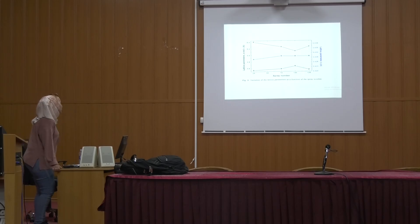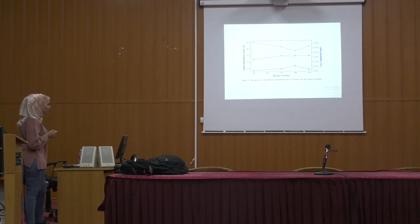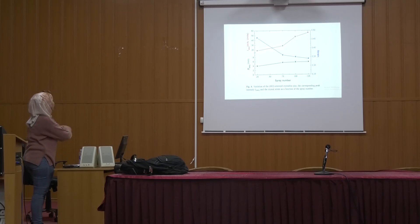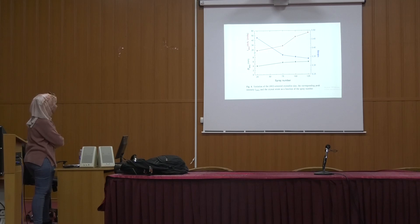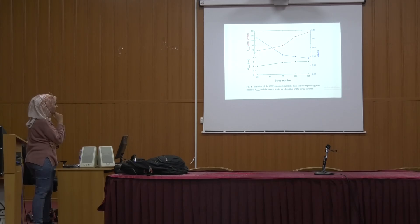In this figure, we can see that the lattice parameters A and C vary inversely. When parameter A increases as a function of spray number, parameter C decreases. This may be due to lattice strain which we discuss as a function of spray number. The increase of crystal size is accompanied by an increase in peak intensity, which reflects enhancement of the crystal structure of the deposited films. The increase of crystal strain reflects stress and dislocations in the lattice.